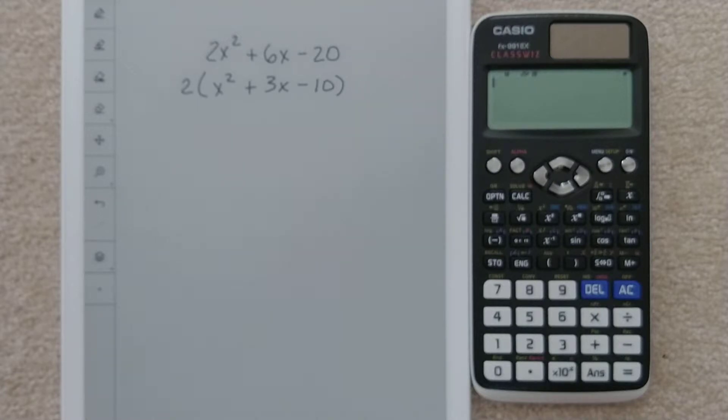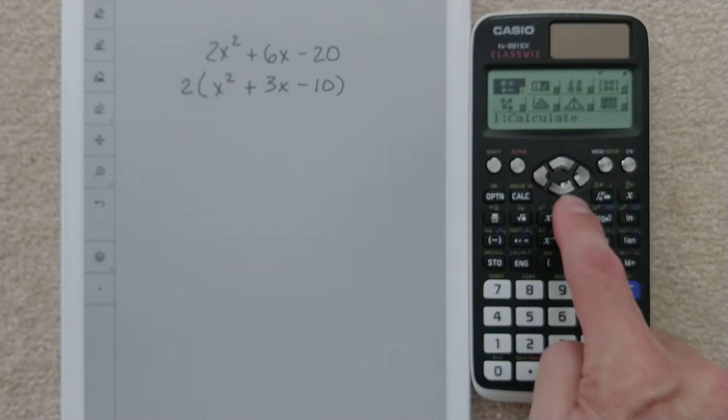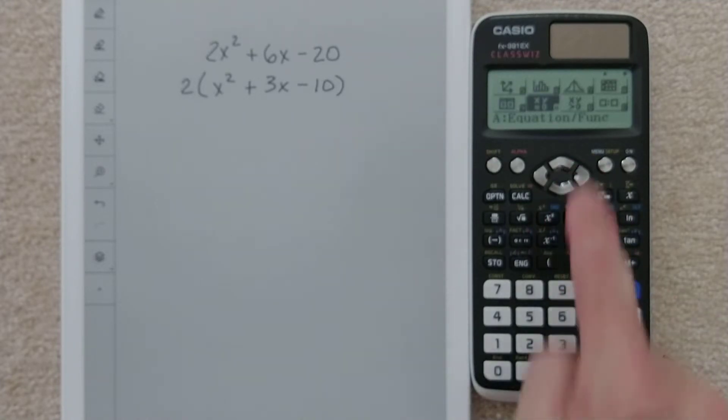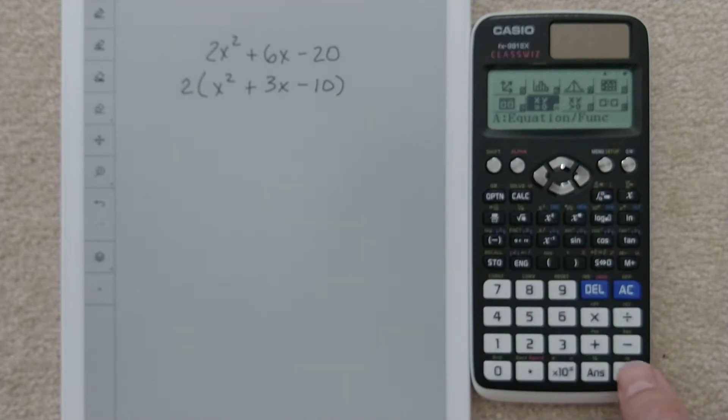And now, let's say I want to factor this, and I don't want to do it manually. I just want to use my technology. So on this calculator, you have to switch menus. I'm going to go into Menu. I'm going to go Down, Down, and Over. Or you could hit Alpha A to jump to this menu. But Down, Down, Over works. Go in there by hitting Equal.